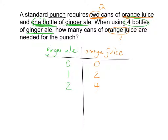I want you to start thinking about whether or not you can see a pattern. Think about how the bottles of ginger ale are increasing — we're increasing by one every time. I'm adding one bottle of ginger ale every time. And as I add one bottle of ginger ale, how many cans of orange juice am I adding every time? We're adding two cans of orange juice. So if I add another bottle of ginger ale, how many more cans of orange juice do we need to add? According to this pattern, we would add another two cans of orange juice, so we would have a total of six cans of orange juice.